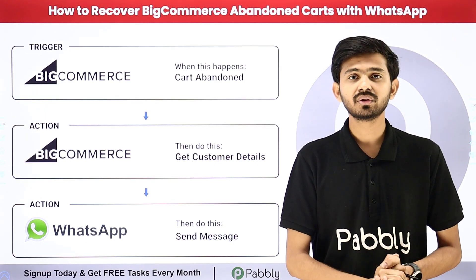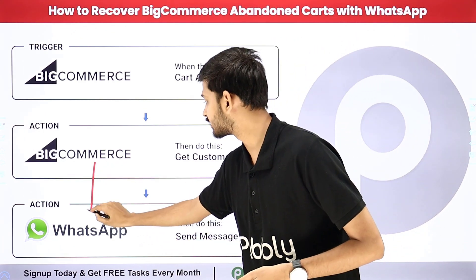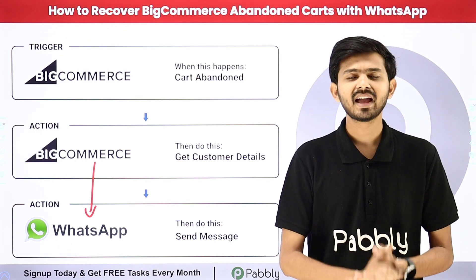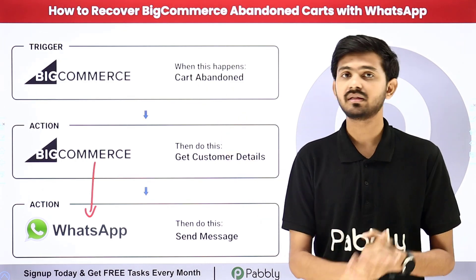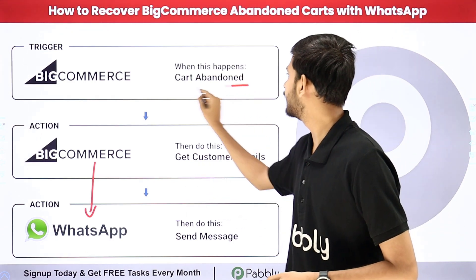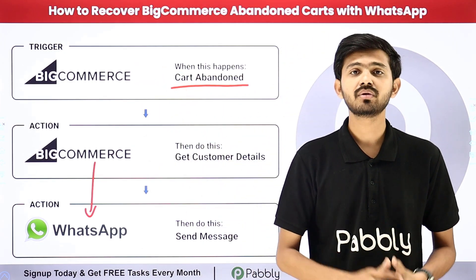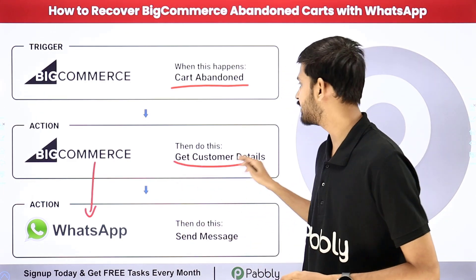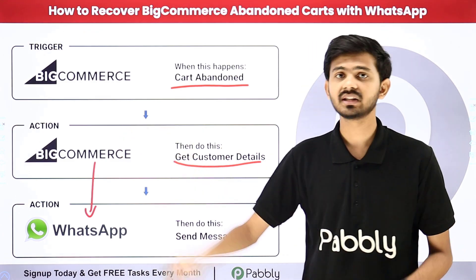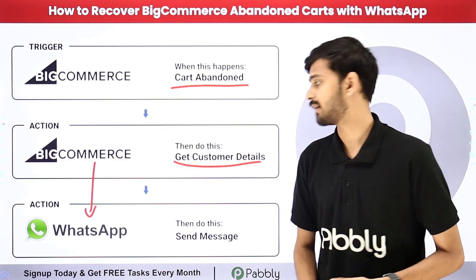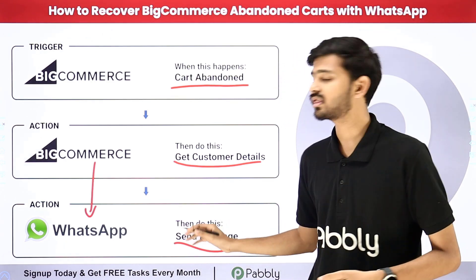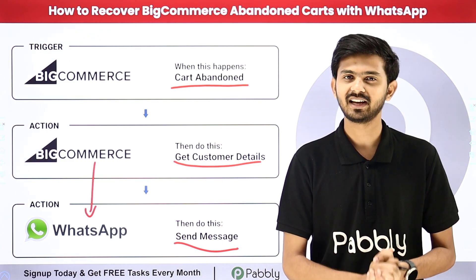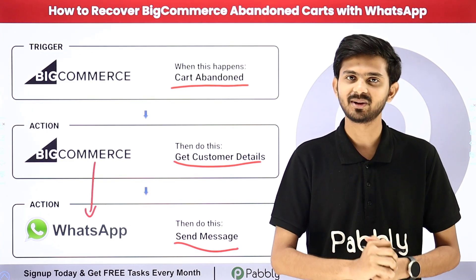Here I'm going to build a connection between BigCommerce and WhatsApp, and for sending the message on WhatsApp I'm going to use WhatsApp Cloud API. I need to build this connection with Pabbly Connect so that as I receive an abandoned cart from BigCommerce, I'll automatically use that cart's details along with the customer details to send a WhatsApp message with a special offer. Let me take you to my computer screen.